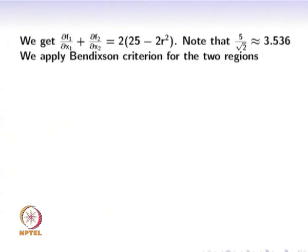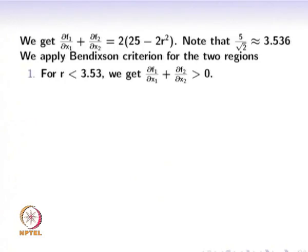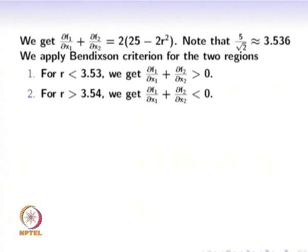Now let us apply the Bendixon criteria to this example. We consider two regions. The first region is bounded by R strictly less than 3.53. For this region, ∂f1/∂x1 + ∂f2/∂x2 is strictly greater than 0. The second region is R strictly greater than 3.54, where this expression is strictly less than 0. In both regions the sign of the expression does not change.